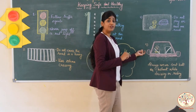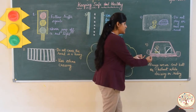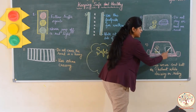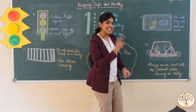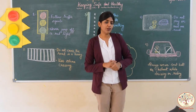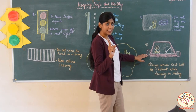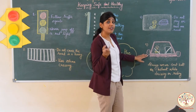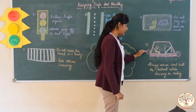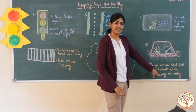Now let's move to the fifth safety rule. Can you see the picture here? This picture shows a person driving a car. Tell me, what is this? Yes, it is a seat belt. We should always wear a seat belt when we are moving in a car. And what should we wear when we are riding a bike? Yes, we should wear a helmet. So the fifth safety rule is: always wear a seat belt or helmet while driving or riding.